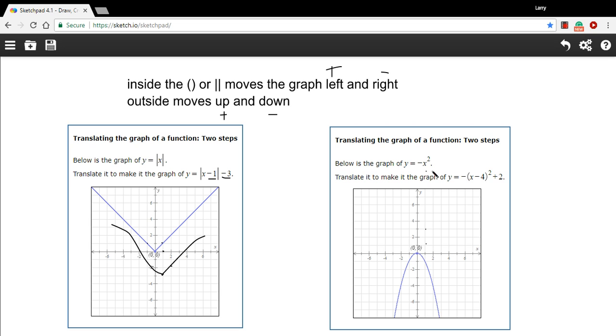All right, let's try this next one. It says here's the graph of y equals negative x squared and translate it to make the graph of y equals negative quantity x minus four squared plus two. So let's start by looking inside the parentheses. We've got a negative four so we're going to move to the right again, this time four units. So let's take the vertex and move it four units to the right.